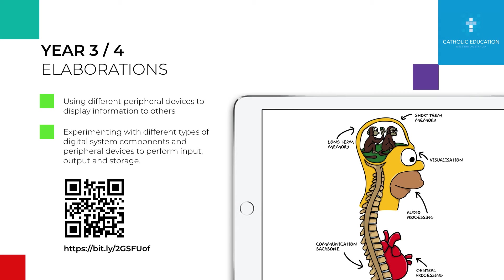So if we look at this little diagram I've created of Homer Simpson, we like to use this metaphor — and it allows students to visualise how the components and systems work in the same sort of metaphor as a human body. As humans, we have long-term memory and short-term memory, visual inputs, audio outputs, a communication backbone through our spinal cord, and our heart which pumps blood throughout our body. If our heart stops, the rest of our body ceases to work. Computer systems work in much the same way — we have a communication backbone which is the motherboard, and all the different components plug into it.